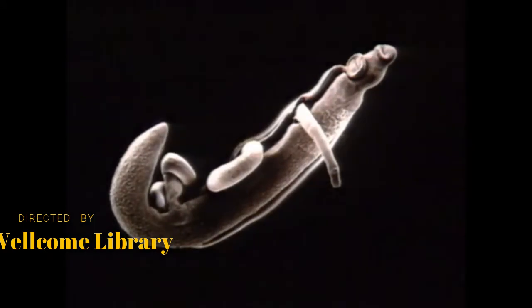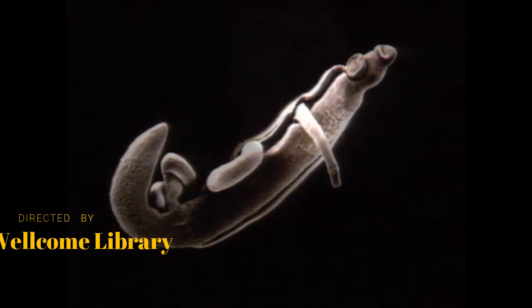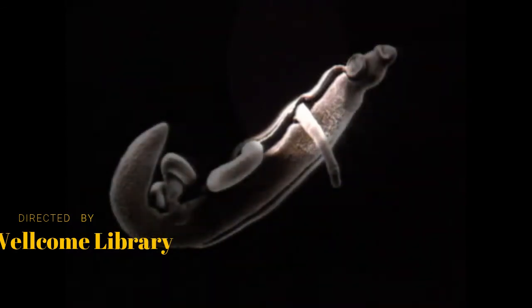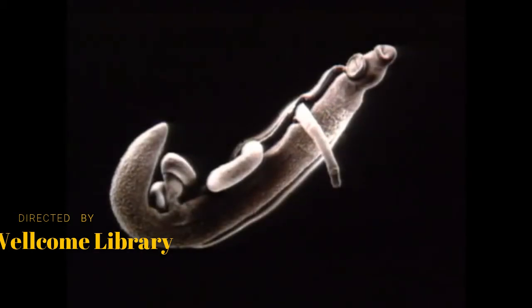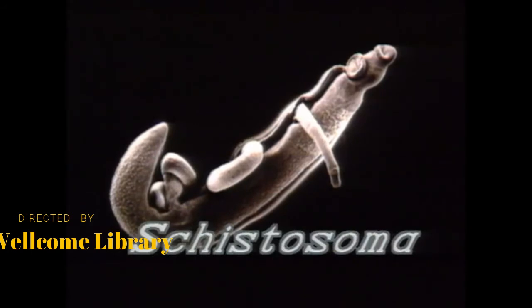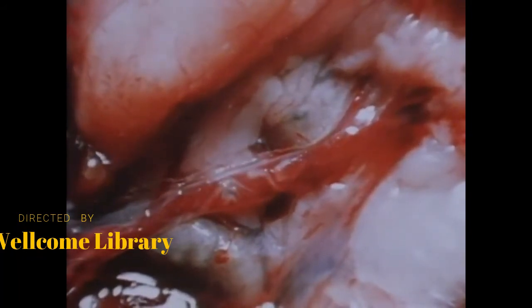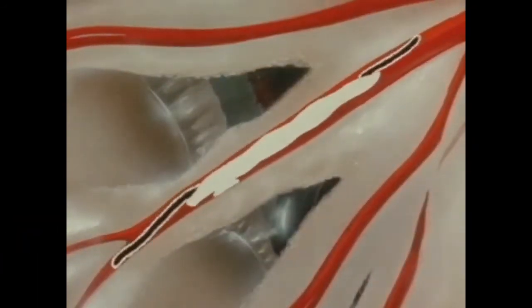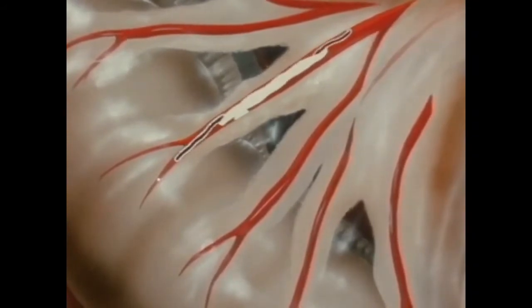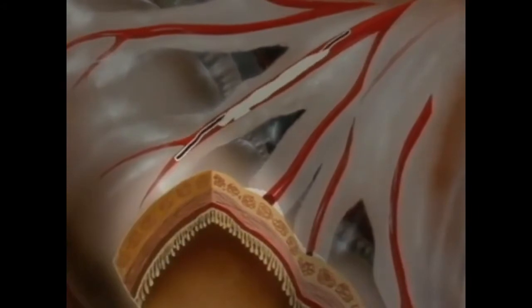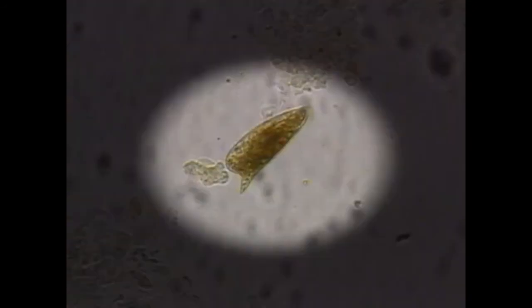A male schistosome is seen here with a female partly held in his gynaecophoric canal. The male is about a centimeter long and uses the lateral folds of his body to form the canal, embracing the longer, more slender female. The scientific name Schistosoma means 'cleft-bodied.' Here are the paired schistosomes in the portal vein of an experimentally infected hamster. The flukes migrate into the mesenteric veins, where the female deposits eggs into smaller blood vessels. The eggs then work through the tissues into the lumen of the intestine and pass out with the feces.